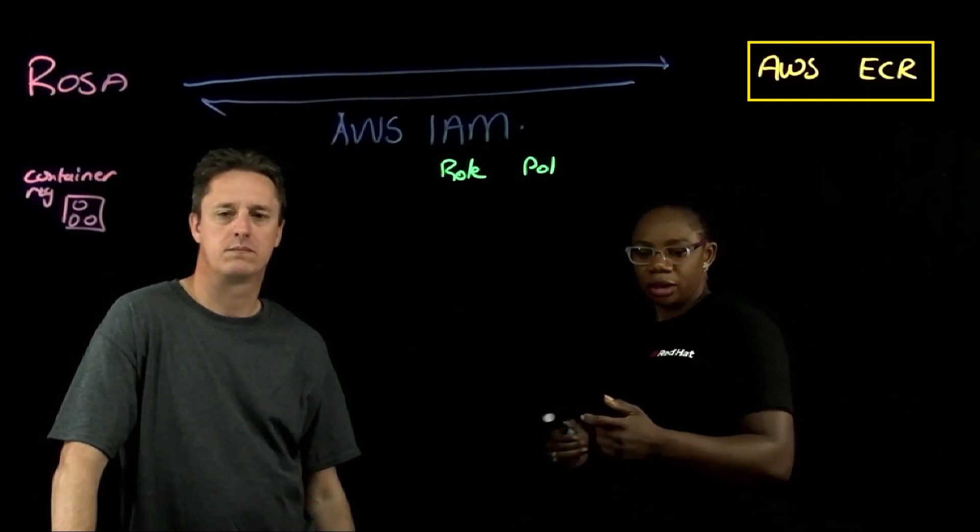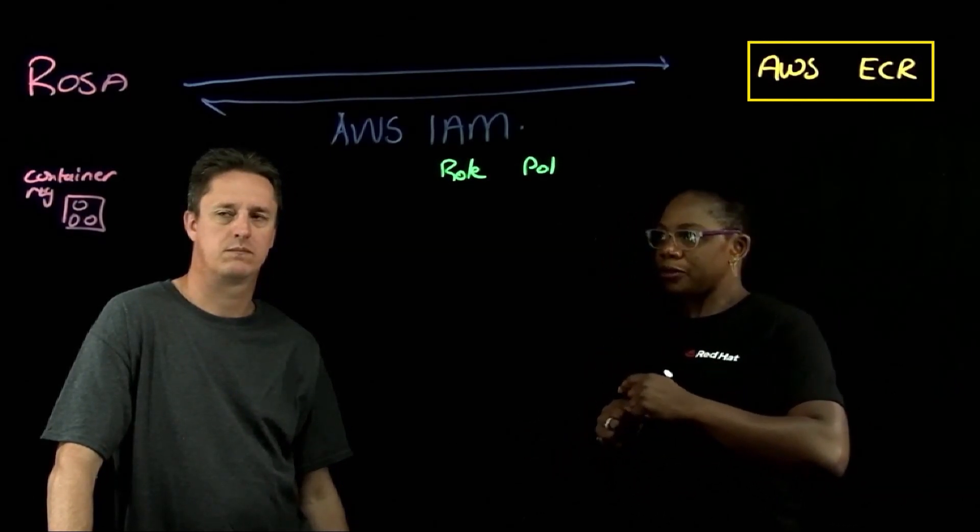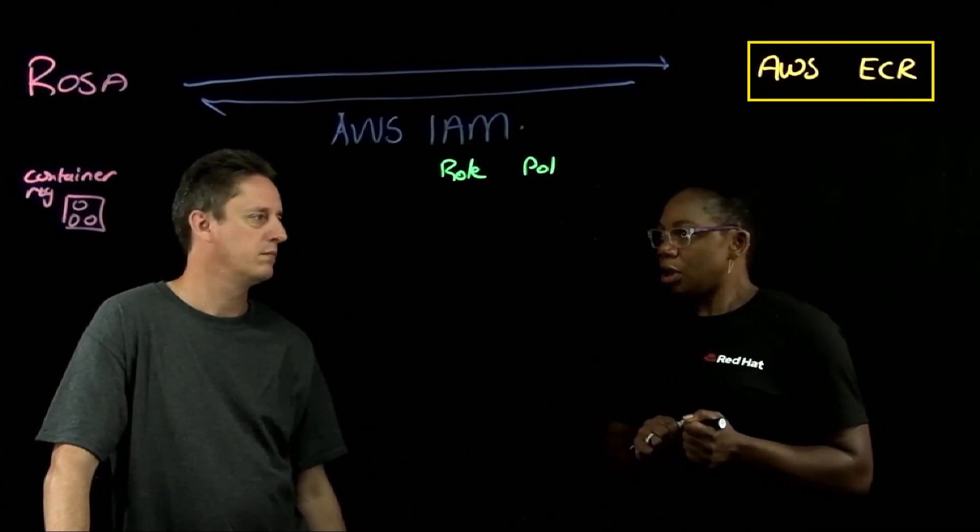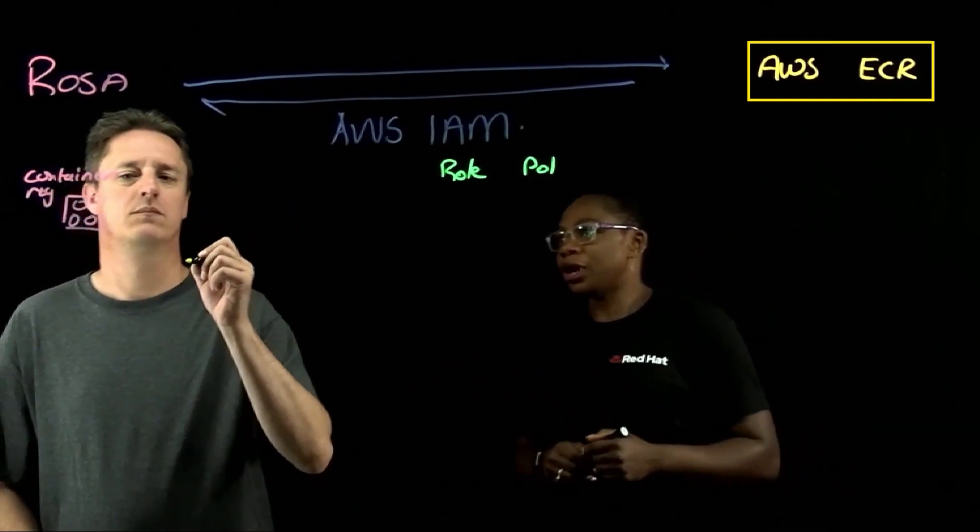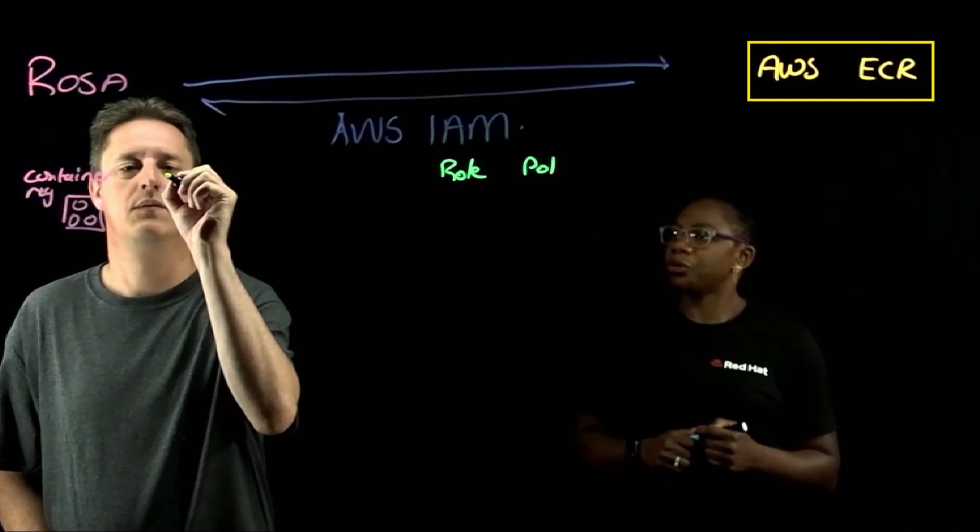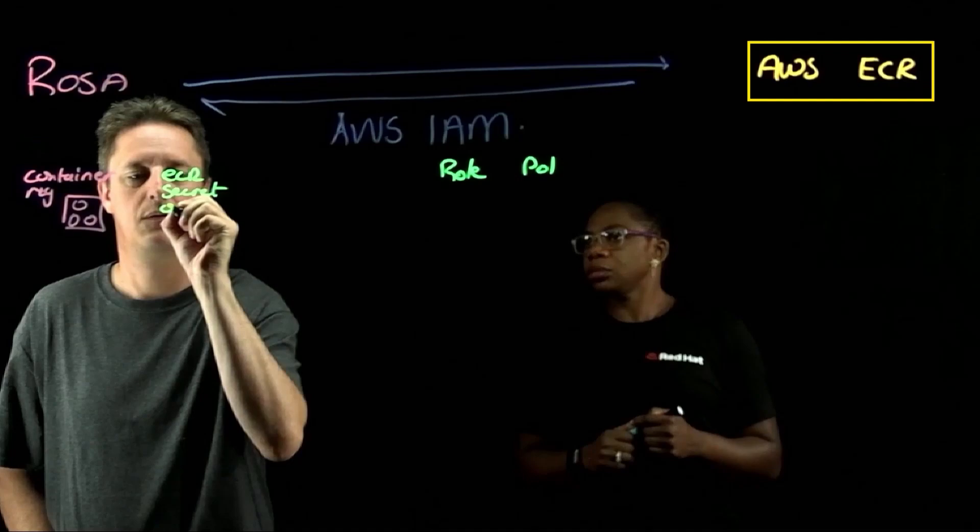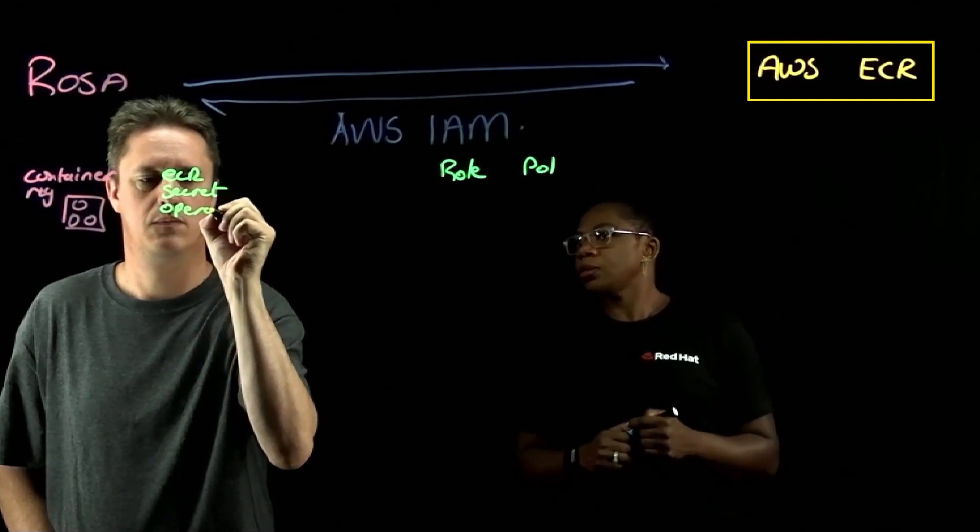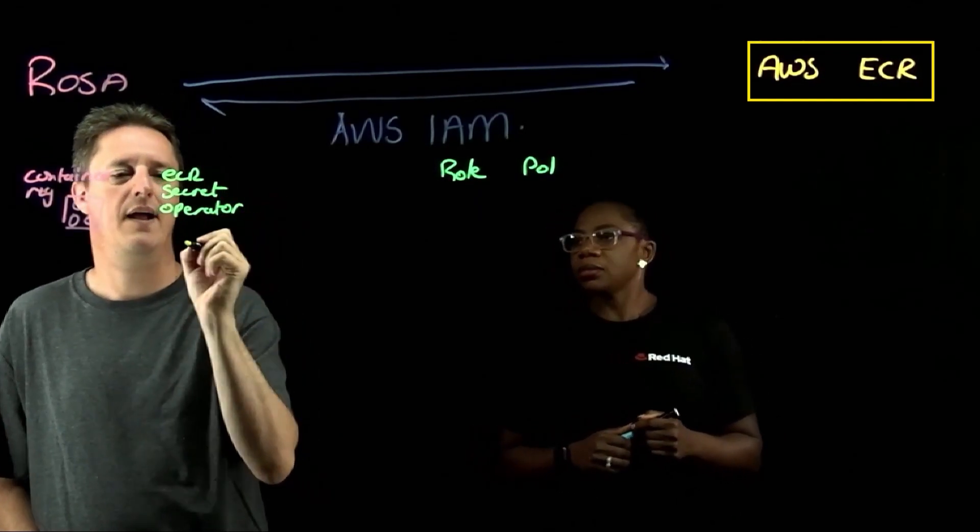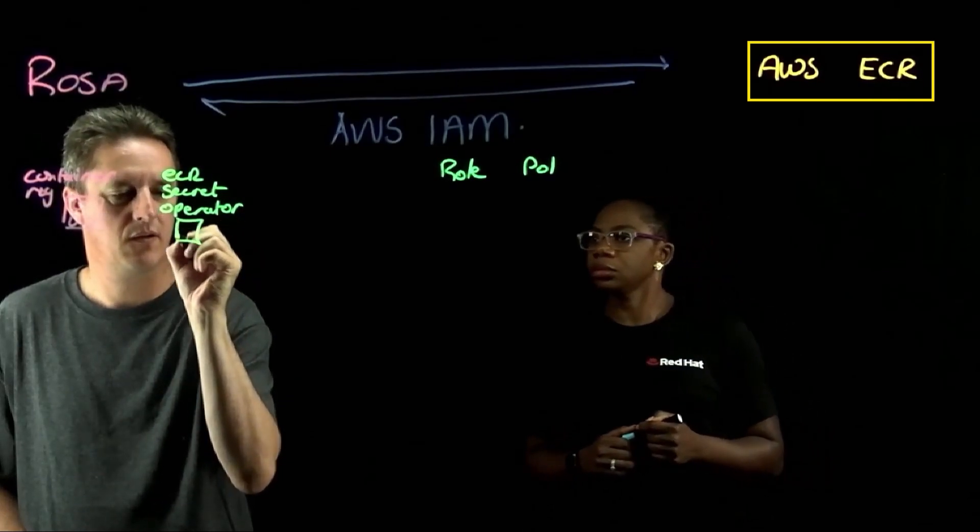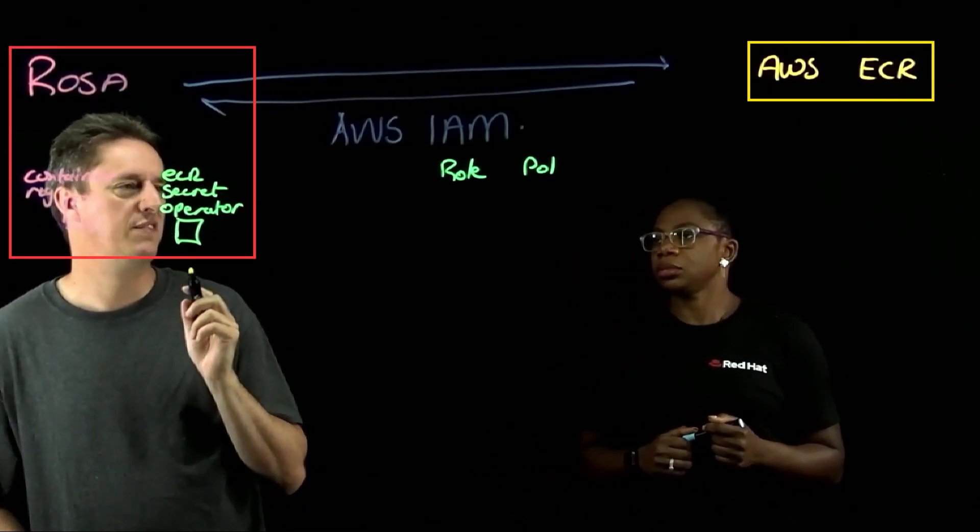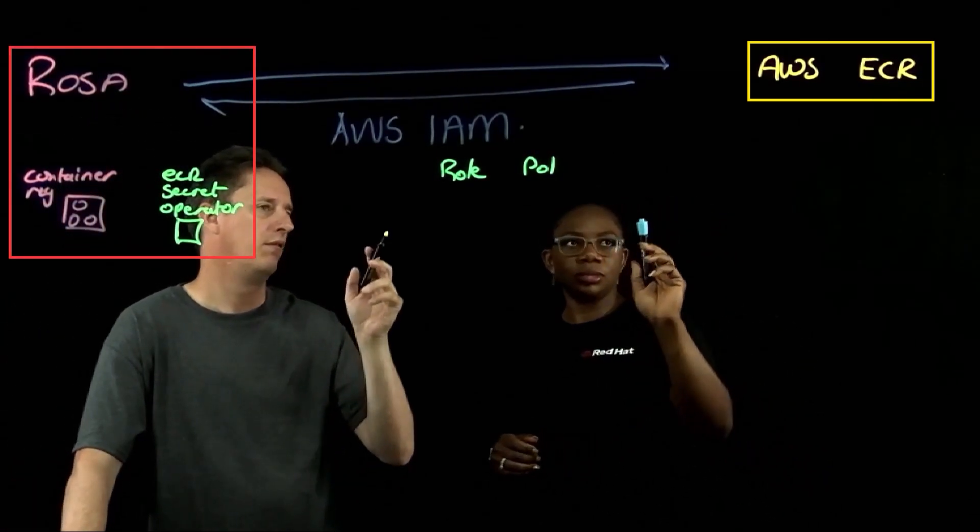So what we have is an operator, a community operator known as ECR secret operator. And this operator automates that process.